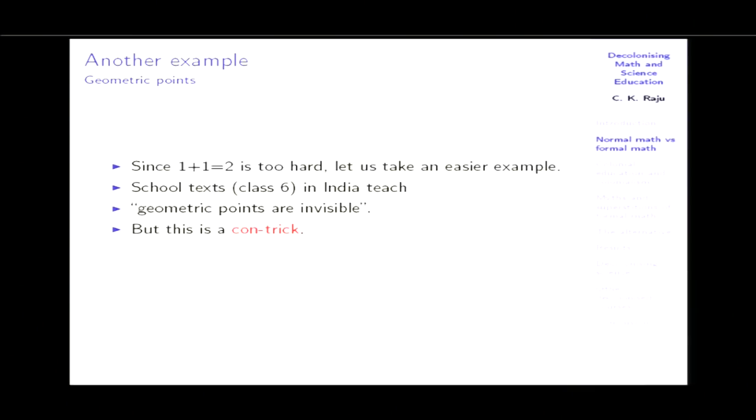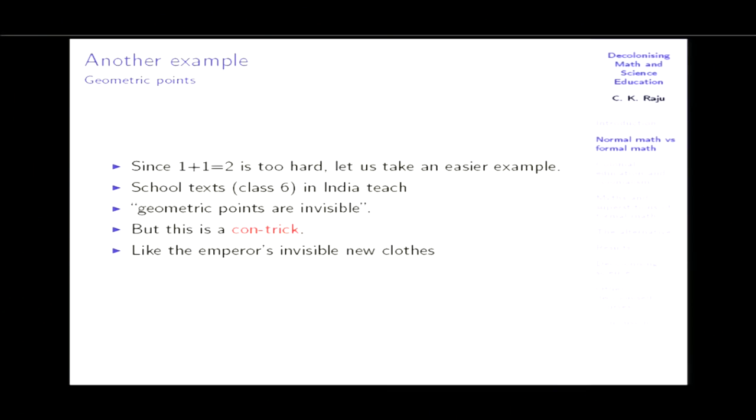Take the simpler example of a point — taught in class six in Indian school texts. They teach that geometric points are invisible. How do you work with invisible points? I asked at UCT: how many people work with invisible points? Like the emperor's invisible clothes, this may involve a contract that the mathematician is able to magically see it in his mind's eye — conflated with Platonic math — that there is this real number and so on. You do not actually work with it; what you actually do is work with dots.